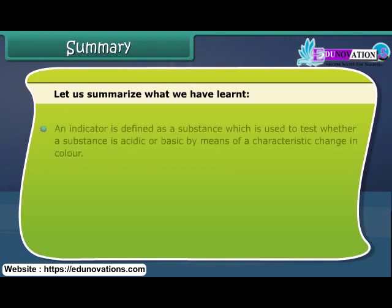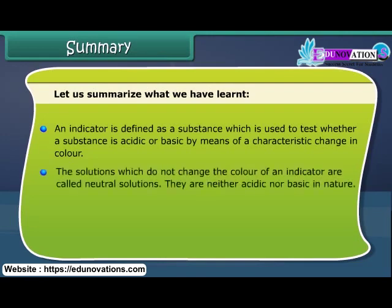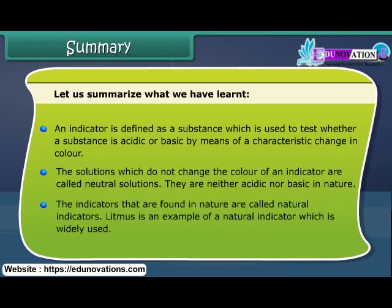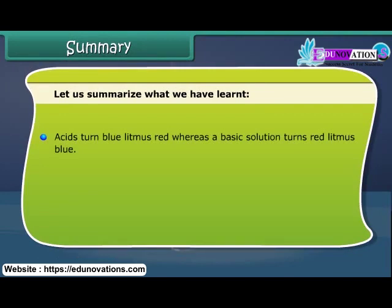An indicator is a substance used to test whether a substance is acidic or basic by means of a characteristic change in color. Solutions that do not change the color of an indicator are called neutral solutions — they are neither acidic nor basic. Indicators found in nature are called natural indicators; litmus is a widely used example. Acids turn blue litmus red, whereas a basic solution turns red litmus blue. The reaction between an acid and a base is known as neutralization.